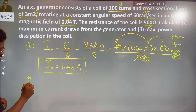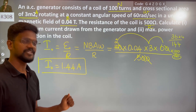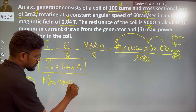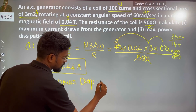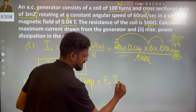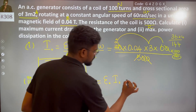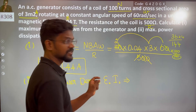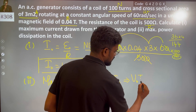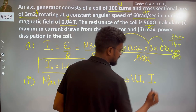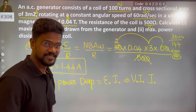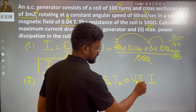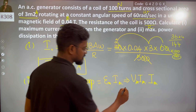Next, maximum power dissipation. Power dissipation is EMF times I, the maximum value. We can write it as V₀ times I₀, which is the maximum value. We are talking about maximum, so this is the maximum power dissipation.